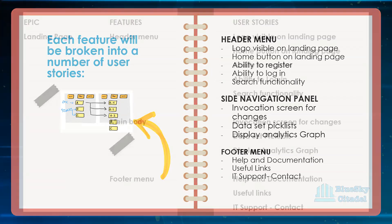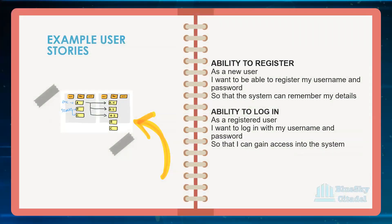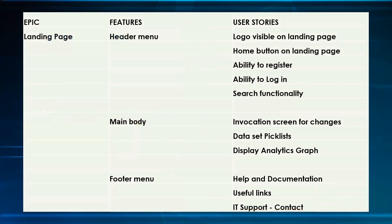Just to recap: the epic is the landing page, the features are the three sections — header menu, side navigation panel, and footer — and those are the user stories that relate to each feature. Moving on, I'm going to pick some user stories and show us. One of the user stories we mentioned was the ability to register. Let's try to use something tied into the examples we've just spoken about.